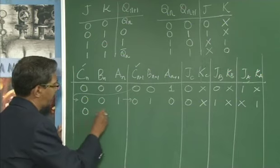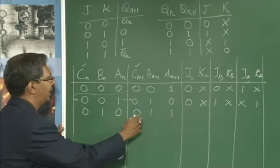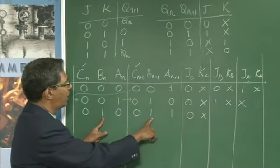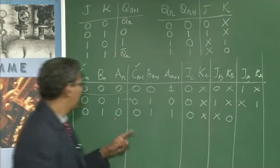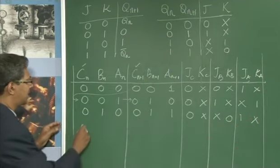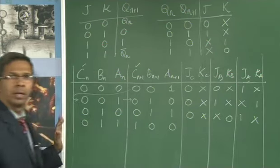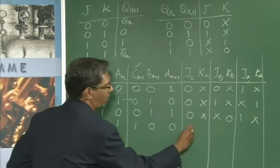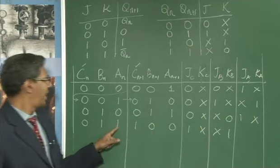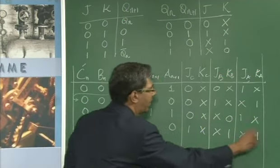For the transition from state 2 (010) to state 3 (011): C stays 0 to 0, so JC=0, KC=X. B stays 1 to 1, so JB=X, KB=0. A goes from 0 to 1, so JA=1, KA=X. For the transition from state 3 (011) to state 4 (100): C goes from 0 to 1, so JC=1, KC=X. B goes from 1 to 0, so JB=X, KB=1. A goes from 1 to 0, so JA=X, KA=1.